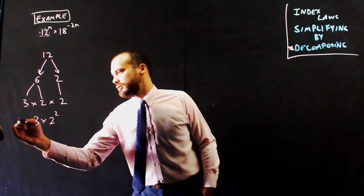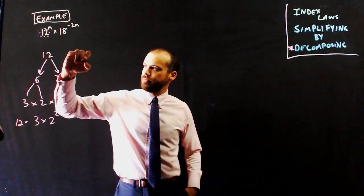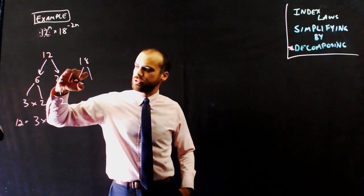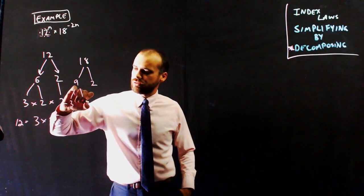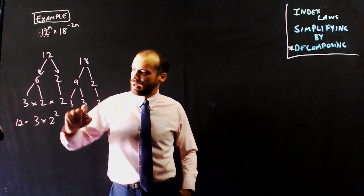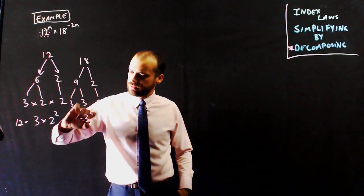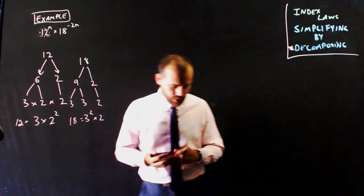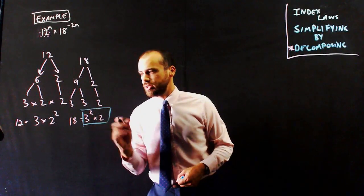So that's what 12 is the same as. 18 can be broken down into 9 times 2, and 9 can be broken down into 3 times 3. That can be rewritten as 3 squared times 2. So I've done a prime decomposition, which you would have learned how to do in year 7.